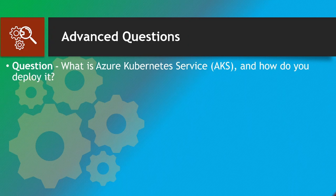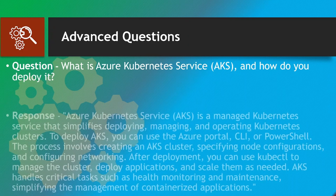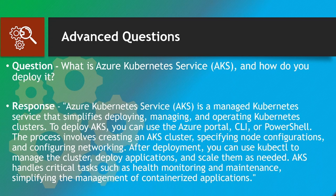What is Azure Kubernetes Service (AKS) and how do we deploy it? Azure Kubernetes Service (AKS) is a managed Kubernetes service that simplifies deploying, managing and operating Kubernetes clusters. To deploy AKS, you can use the Azure portal, CLI, or PowerShell. The process involves creating an AKS cluster, specifying node configurations and configuring networking. After deploying, you can use kubectl to manage the clusters, deploy applications and scale them as needed. AKS handles critical tasks such as health monitoring and maintenance, simplifying the management of containerized applications.